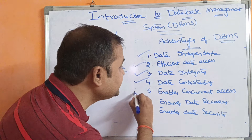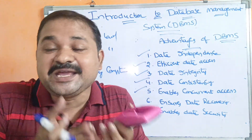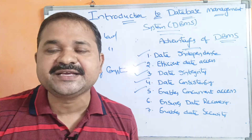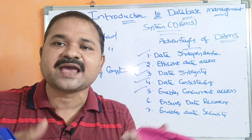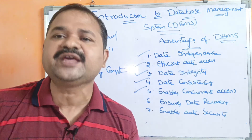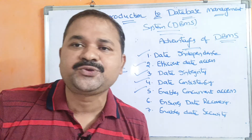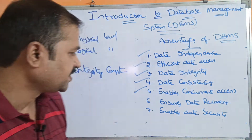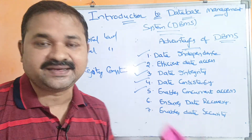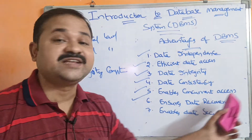The next advantage is enabling concurrent access. Concurrent means multiple users can access the database simultaneously. For example, multiple employees can access and update the database at the same time — employee one can update his details while employee two updates hers, all done in parallel, continuously, and concurrently.